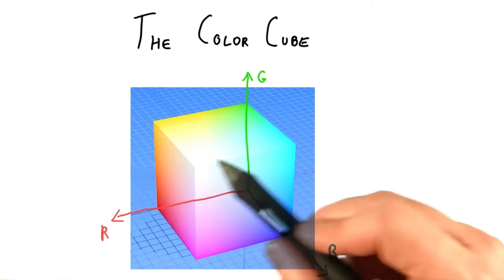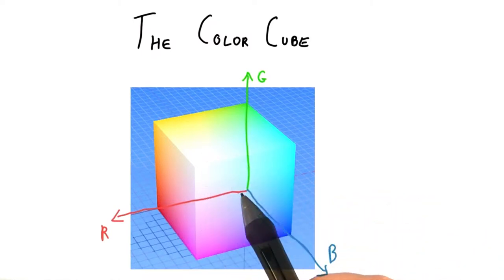We can't see the interior of the cube showing intermediate values. All the values we can see in this particular view have one or more channels at the maximum.